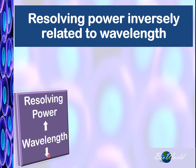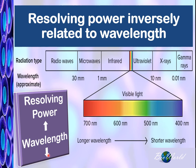Let's have a look at the spectrum of light. Visible light is between 700 nanometers to 400 nanometers. So if we are going to place a filter on our white light, a red filter would not be suitable since it has a longer wavelength.